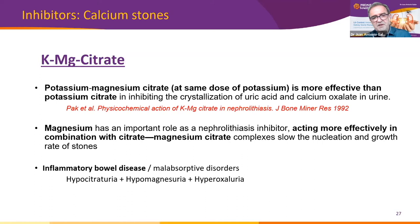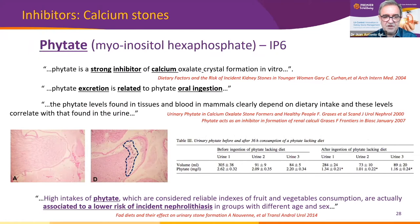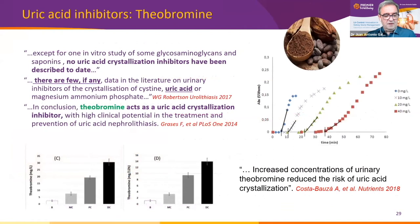As hypocitraturia, hypomagnesuria, and hyperoxaluria can occur in bowel disease patients, potassium magnesium citrate is particularly relevant. Despite being a strong inhibitor of calcium oxalate crystal formation, phytate is not included in the guidelines normally, probably due to scarce clinical studies. Its creation — its excretion — is clearly related to oral ingestion of fruits, vegetables, and cereals, and is associated to a lower risk of incident nephrolithiasis in different groups of patients with different age and sex.